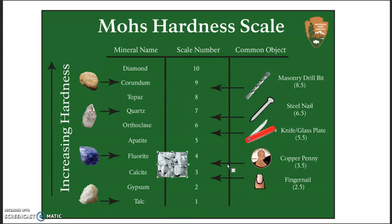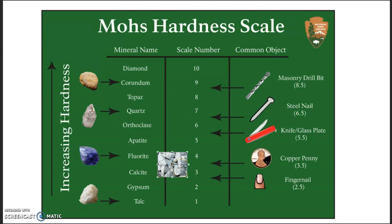Let's say this argument were true: limestone is harder than soft copper, so by that definition if I'm selling copper pipe I could make a limestone saw to cut it. Why don't they make limestone saws to cut copper? Because it doesn't work that way.